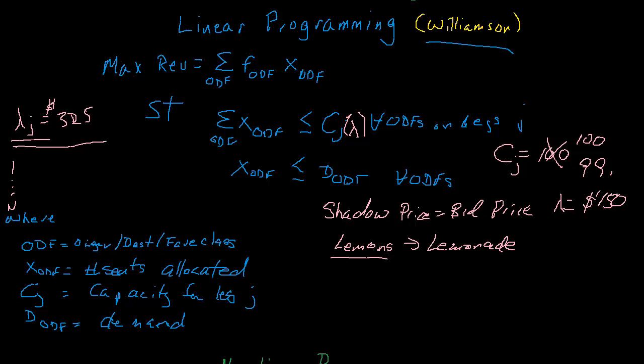Okay, now that we've seen how to use linear programming to come up with a bid price we can use in our inventory control mechanism, we're going to take this model one step further and address the assumption that the demand is deterministic.